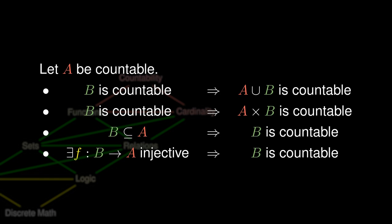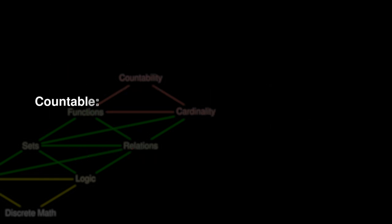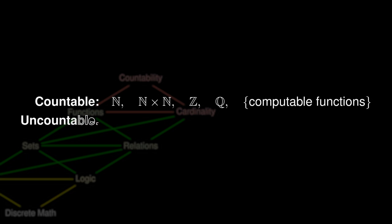Several countable sets include the natural numbers, the product of natural numbers, the integers, the rationals, and the set of all computable functions. Uncountable sets include the power set of the natural numbers, the real numbers between 0 and 1, and by extension the real numbers, as well as the set of functions in general. This allows us to derive that there is at least one uncomputable function.